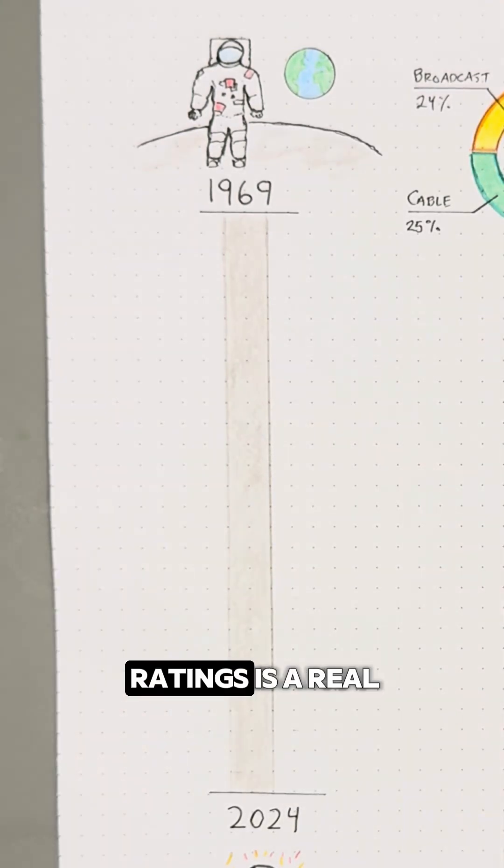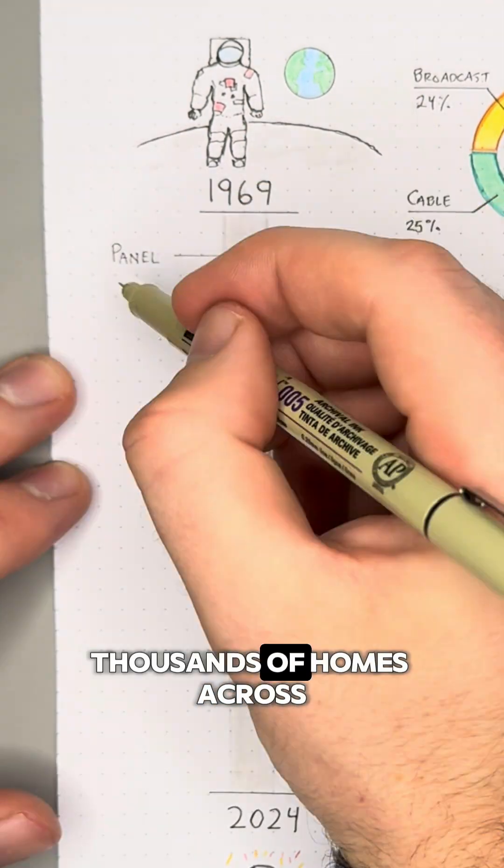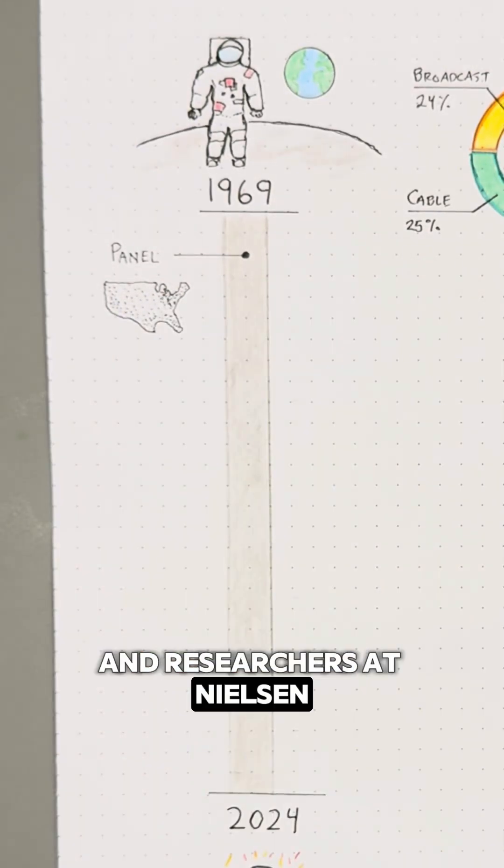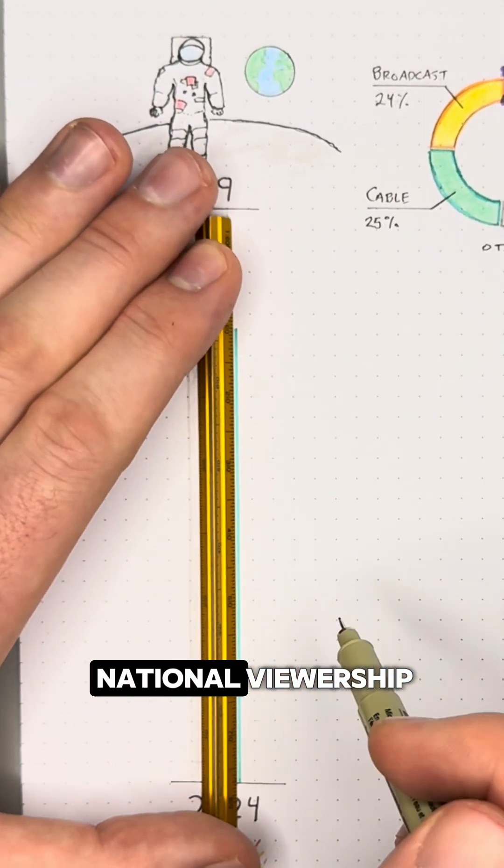The core of Nielsen ratings is a real human panel, thousands of homes across the country opting in to have their viewership monitored and researchers at Nielsen using that to estimate national viewership.